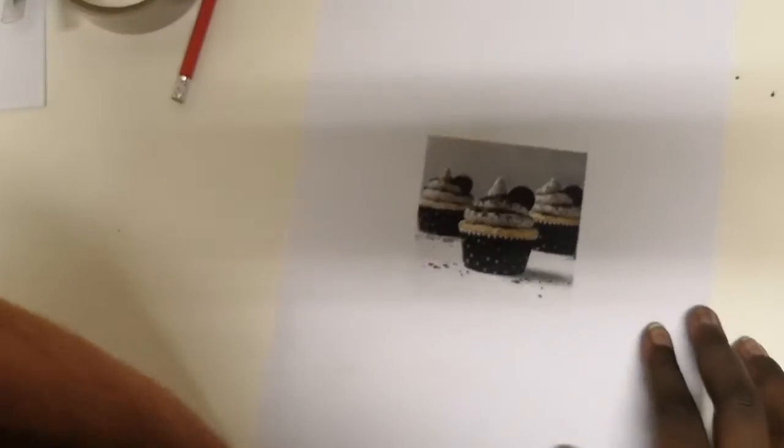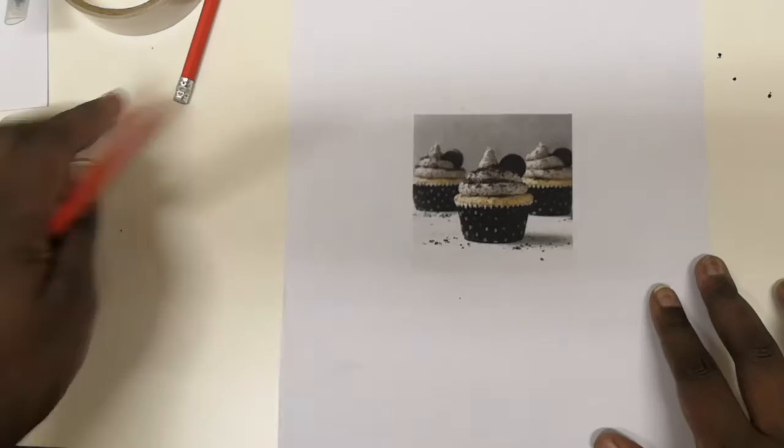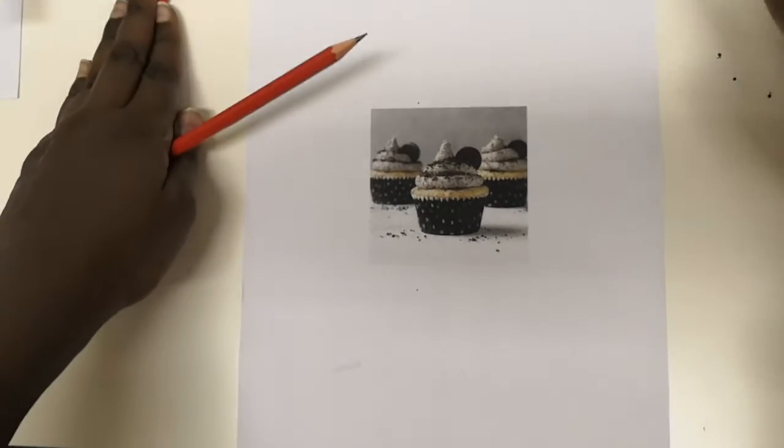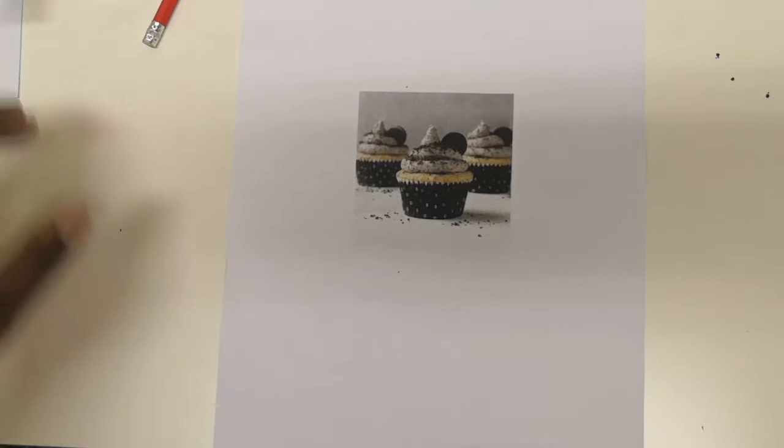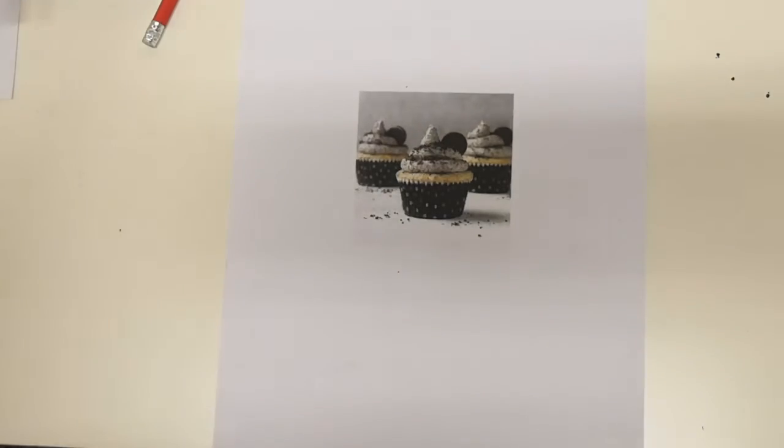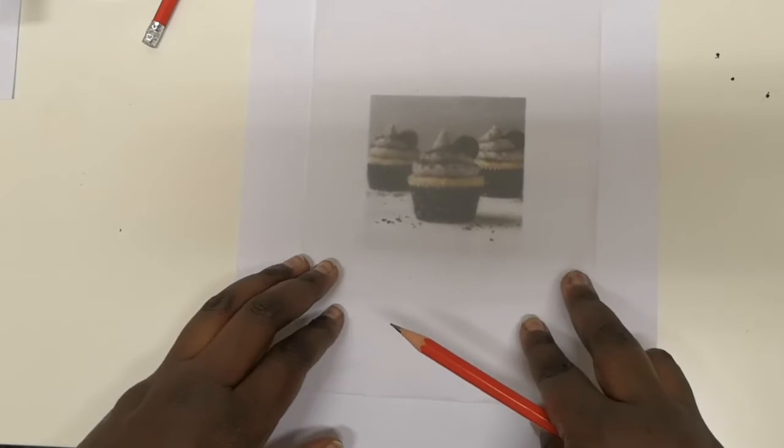The first step is to actually get your image in place. I have an image right here which is of a cupcake, so my business that I'm focusing on will be a cupcake business because I want the logo to be a cupcake of some sort. We're going to place some tracing paper over the image.